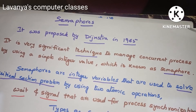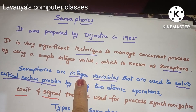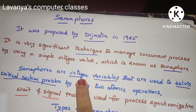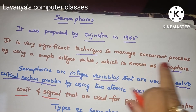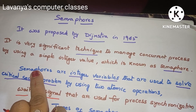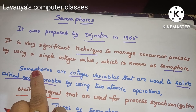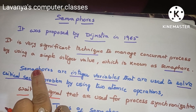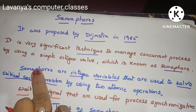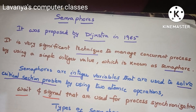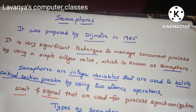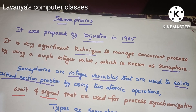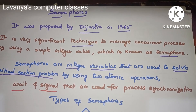So what is a semaphore? A semaphore is just an integer value used for concurrent process execution. Without any problem, all processes can use shared resource variables. For that we need semaphores. Thank you for watching — if you like this video, please subscribe to my channel and share it with your friends.